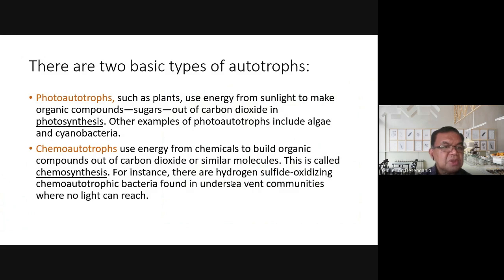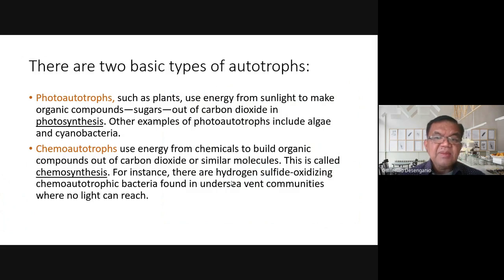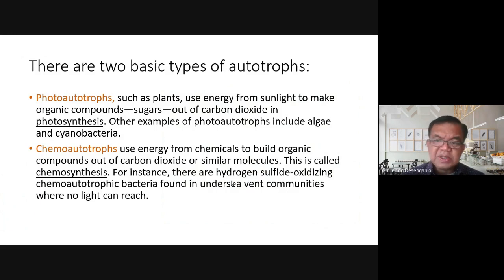There are two classifications of autotrophs. The first are photo-autotrophs — such as plants — which use energy from sunlight to make organic compounds like sugar from carbon dioxide through photosynthesis. Other examples of photo-autotrophs include algae and cyanobacteria. The prefix 'photo' means light.